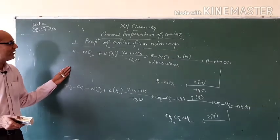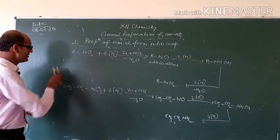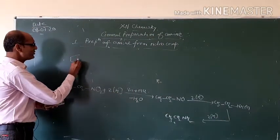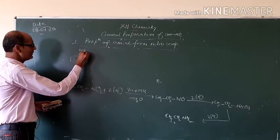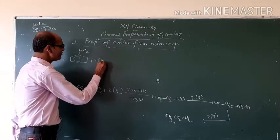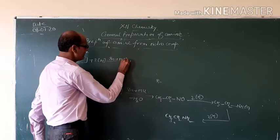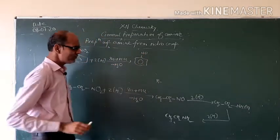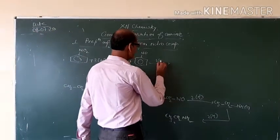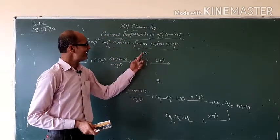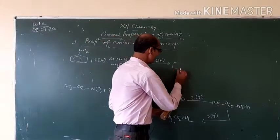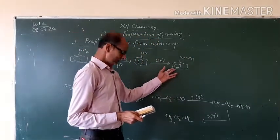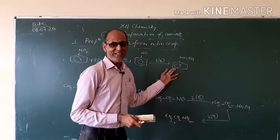In aromatic cases, by the reduction of nitrobenzene we can prepare aniline — this is the most important reaction. Nitrobenzene is a benzene ring with single bond NO2. On reduction in the presence of Sn and HCl, first you get nitrosobenzene (ring–NO) and water is removed.